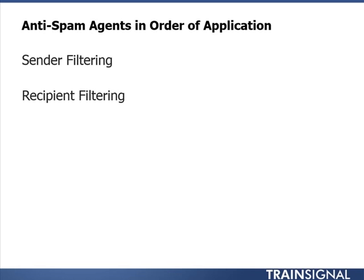Next up is Recipient Filtering, the next part of the Anti-Spam application process. With Recipient Filtering, you can specify a list of email recipients from which the server will not accept messages. You can block individuals or domains using this feature. You can also use Recipient Filtering to block messages that are sent to recipients not listed in the global address list.